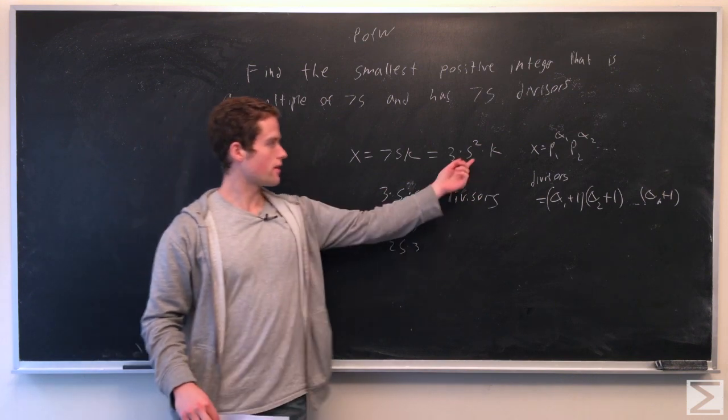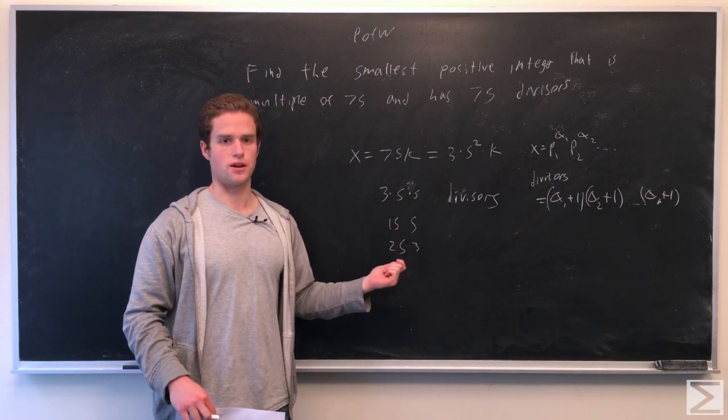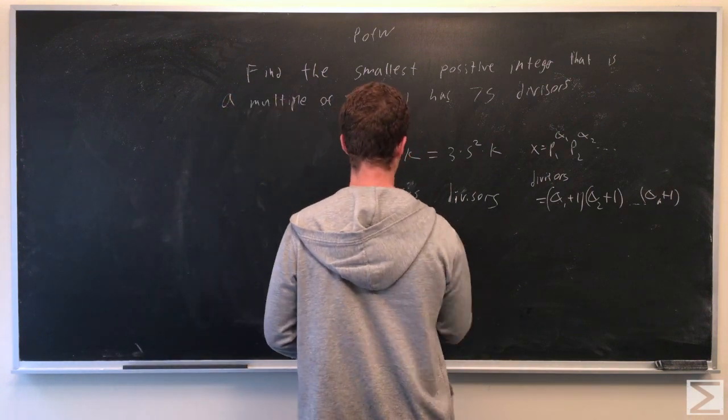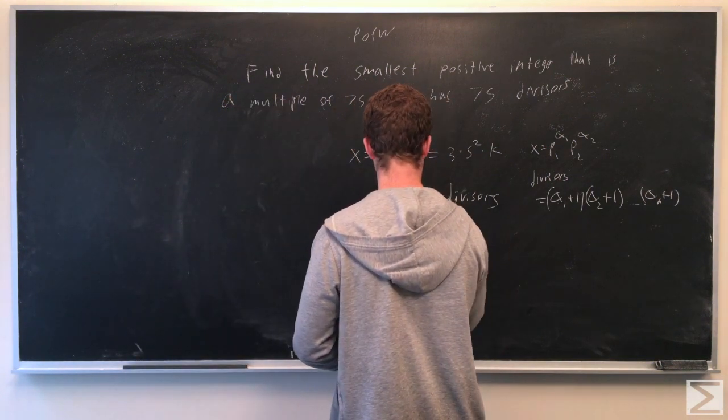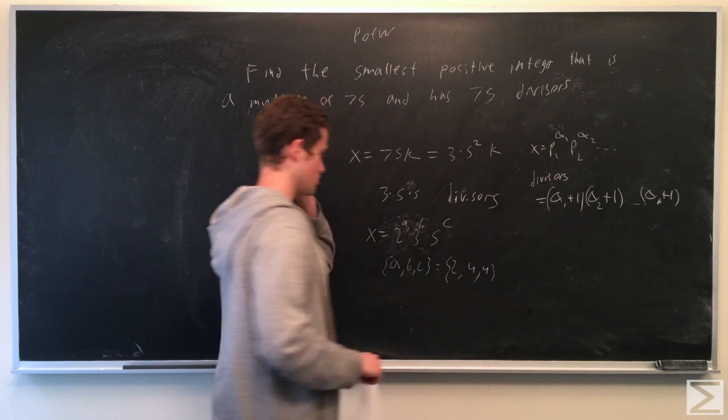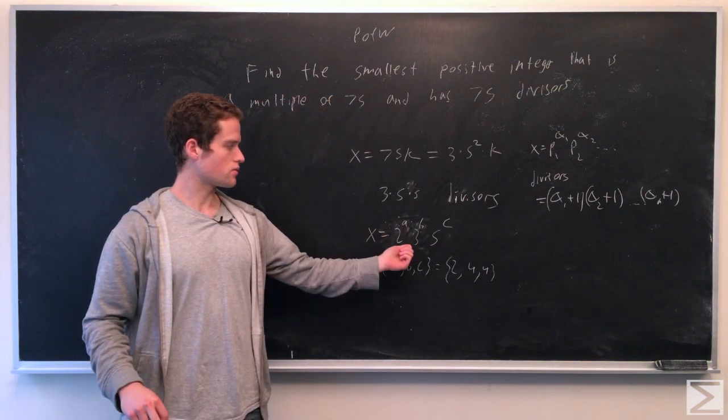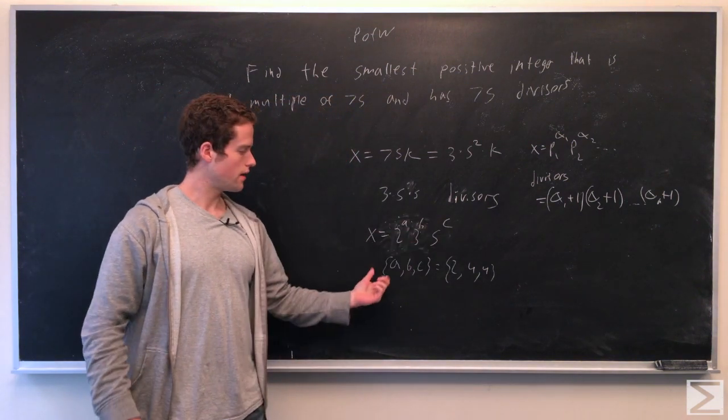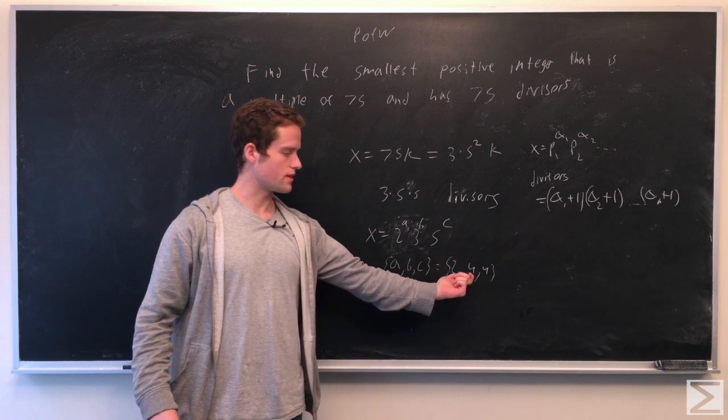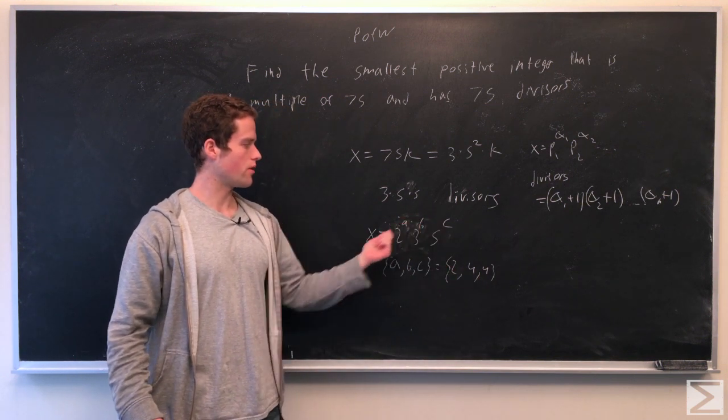So x is going to have the form 2^a × 3^b × 5^c. And a, b, and c are going to be the same set as {2, 4, 4}. So we're going to want 2, 4, 4 as the exponents.